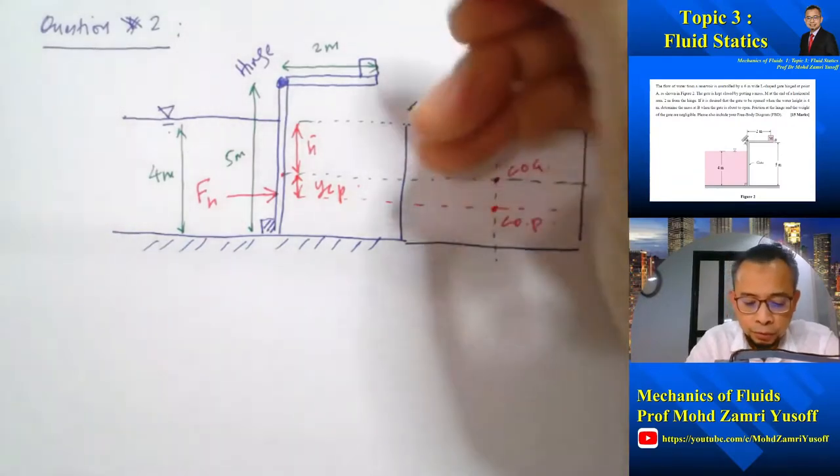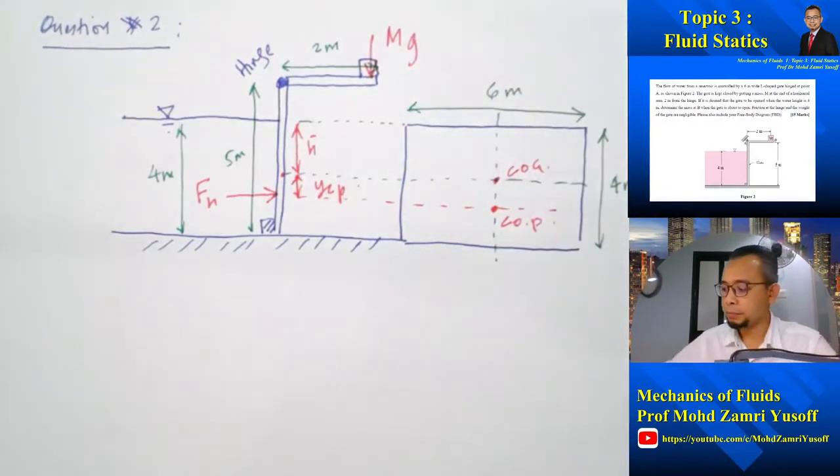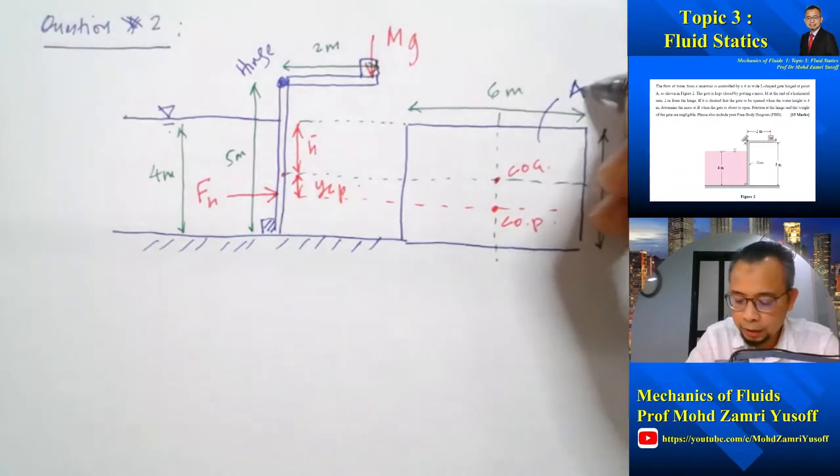So the force due to the mass will be acting here, and that will be equal to mg. And this is actually the normal area.